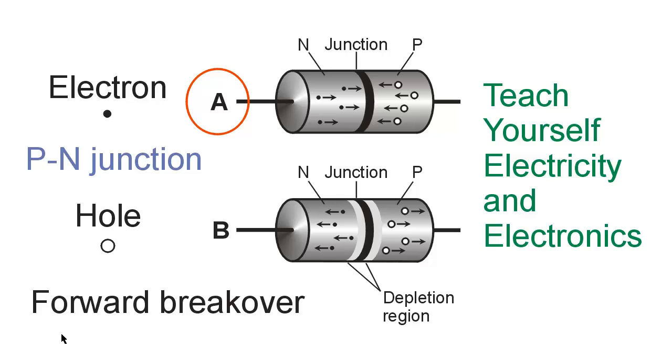And in a silicon diode, that is typically 5 or 6 tenths of a volt. If the voltage is not at least that great, then there will be no conduction. This thing will act as an insulator, almost like a capacitor, like an open circuit.